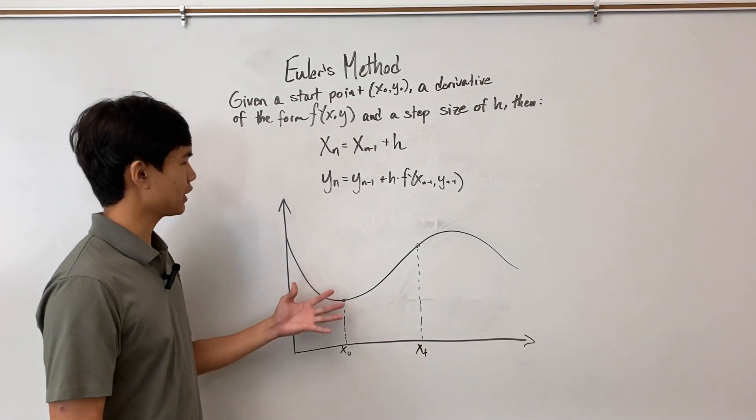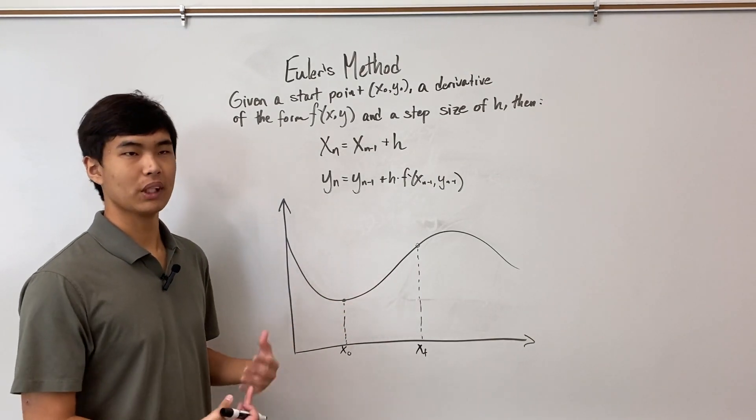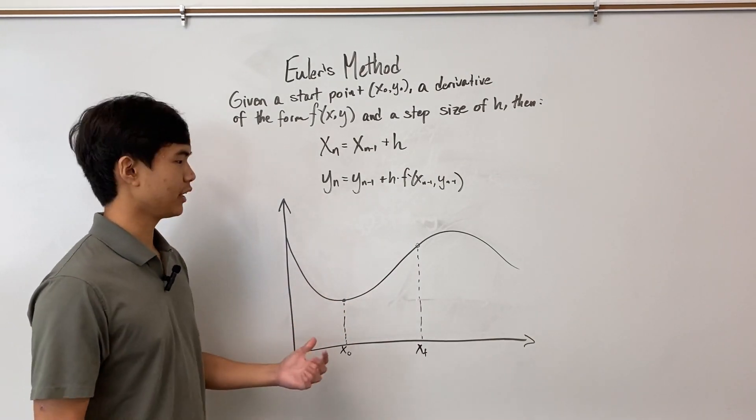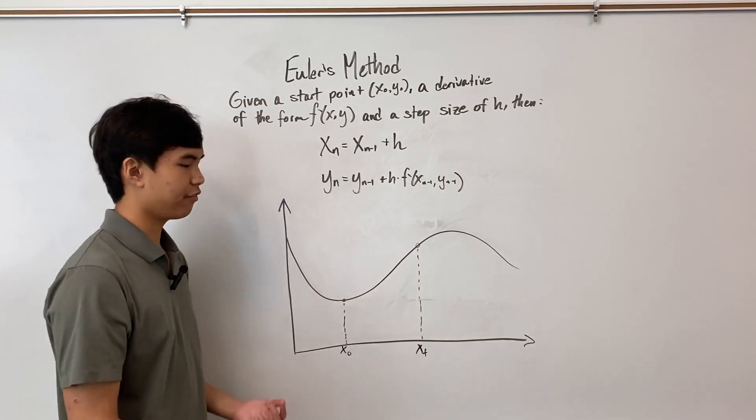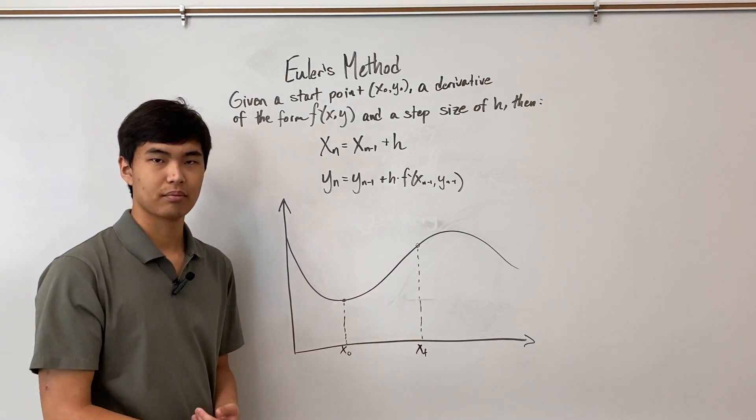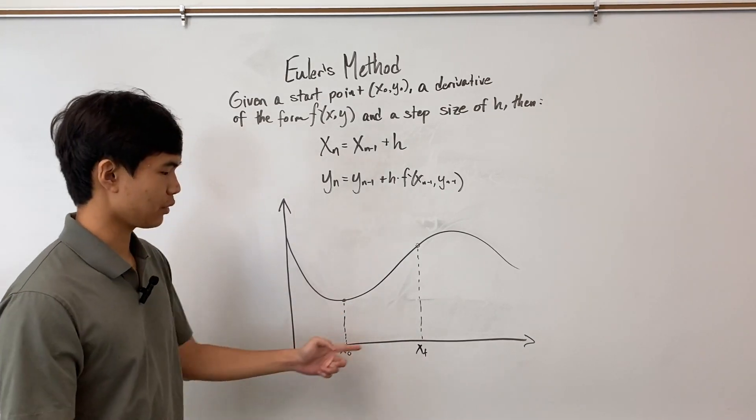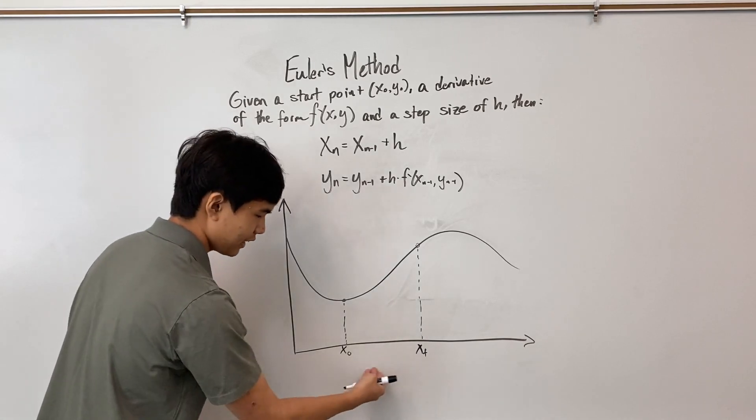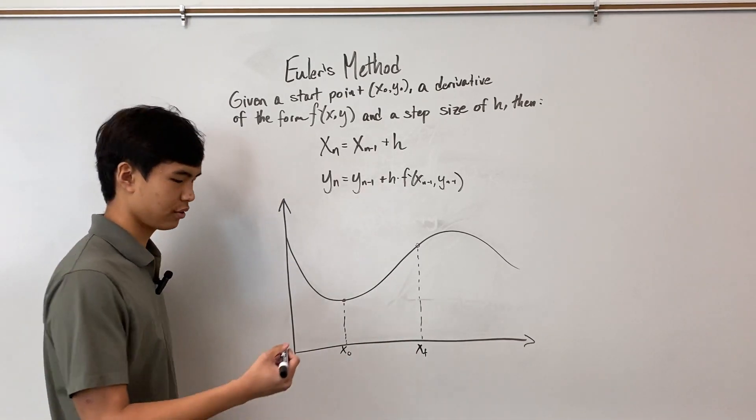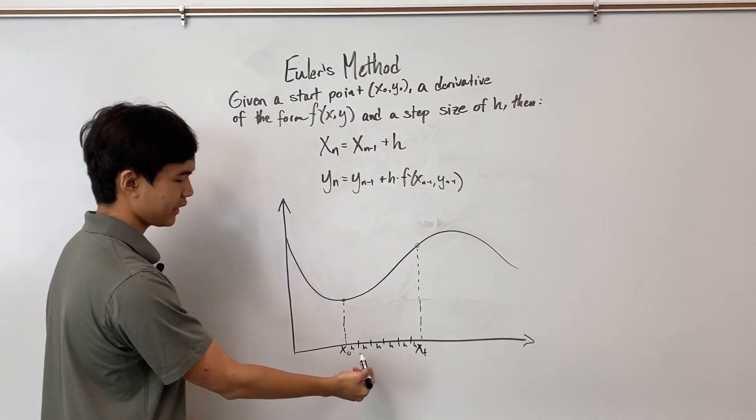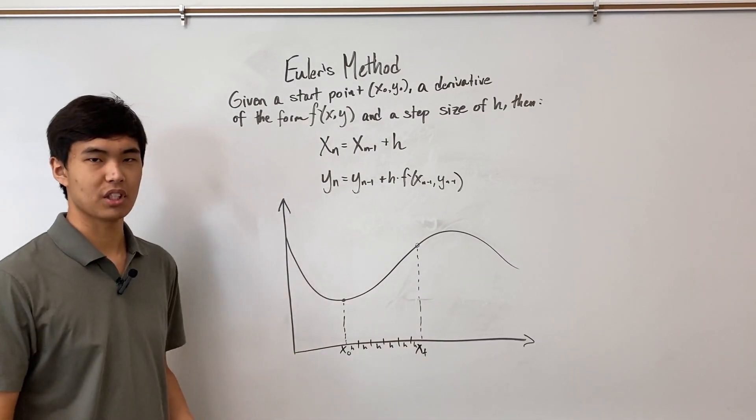The easiest way to see how this works is with a graph. So whenever you use Euler's method, you're trying to approximate the value here at x final from some known value here at x₀. The first step in making this approximation is dividing this interval into equal subintervals, each of width h, like so. So here, I've split it into six equal subintervals of width h.